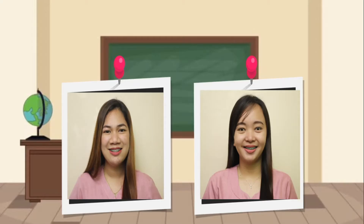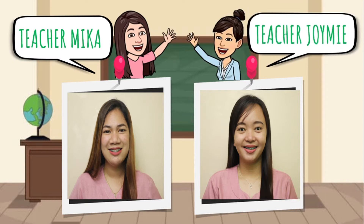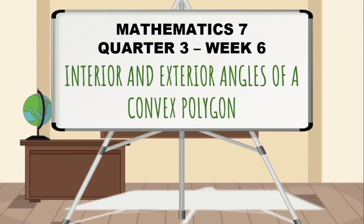Hello, mga ka-cute angels! Welcome back for another Masinic episode. This is Teacher Mika, and this is Teacher Joy Mie. For third quarter's week 6 lesson, we will discuss the relationships of interior and exterior angles of a convex polygon.